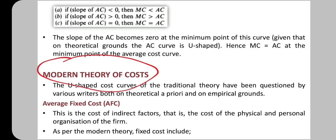Modern theory of costs: the U-shaped cost curve of the traditional theory has been criticized and questioned by various writers, both on theoretical and empirical grounds. The modern theory of cost proposes a different structure. The cost includes the physical and organizational expenses of the firm.